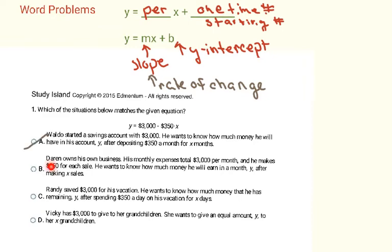Looking at B: Dharan's monthly expenses total $3000 and he makes $350 for each sale. He wants to know how much he'll earn y after x sales. To calculate earnings, you'd compute 350x minus 3000 — subtracting expenses — which is backwards from what's in our equation. So it's not going to be B.